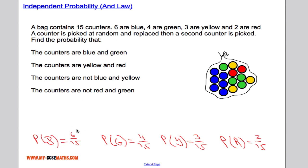The probability of blue is 6 out of 15, green is 4 out of 15, yellow is 3 out of 15, and red is 2 out of 15. For the probability of blue and green, that equals the probability of choosing blue, 6 out of 15, multiplied by the probability of choosing green, 4 out of 15, which equals 24 out of 225.